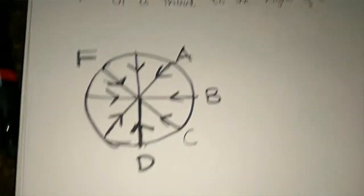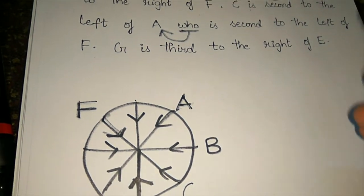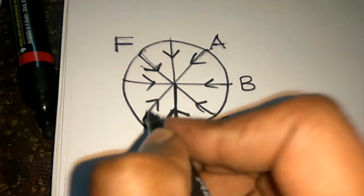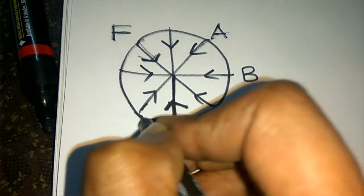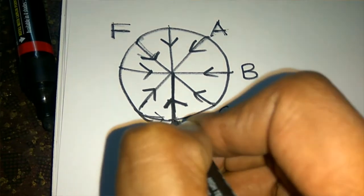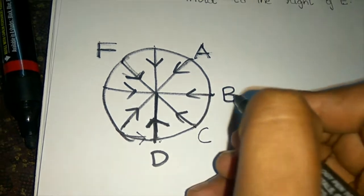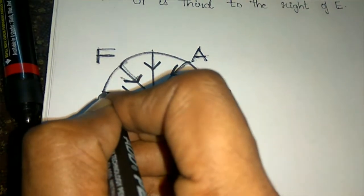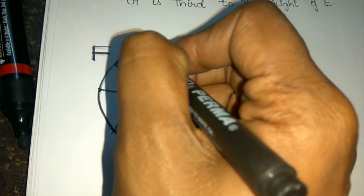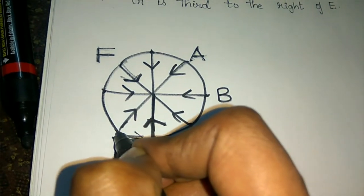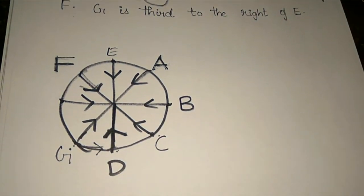Next clue: G is third to the right of E. From E, going right — first right, second right, third right — that position is G. For example, if E is placed here, third to the right lands on C's position, so we adjust. Working through the example: E is here, third right is confirmed, and G is placed accordingly.